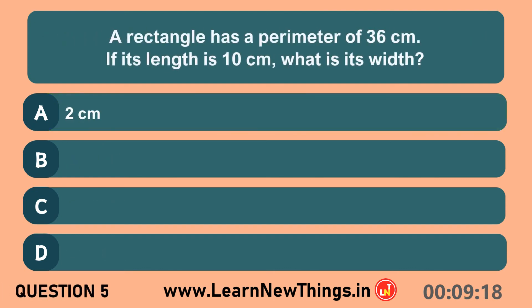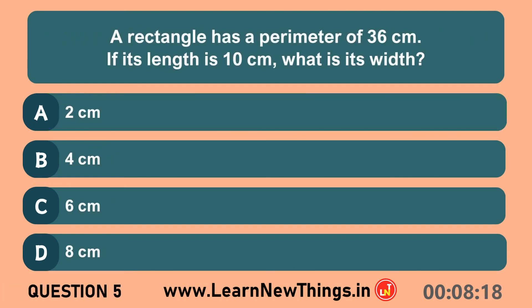A rectangle has a perimeter of 36 centimeters. If its length is 10 centimeters, what is its width? 8 centimeters.